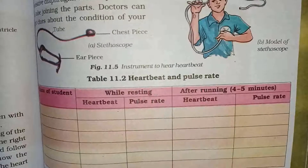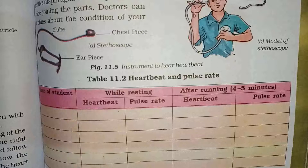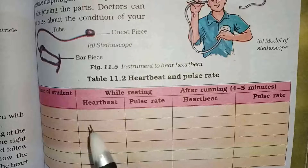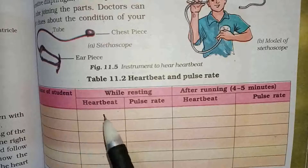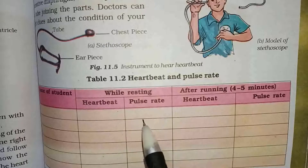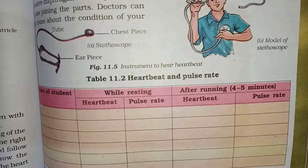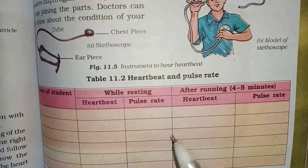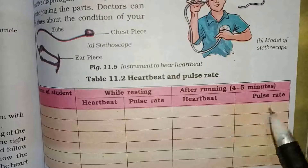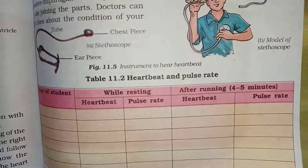Heartbeat and pulse are related. Aapko kya karna hai — apne family members ke naam yahan likhne hai. Jab rest kar rahe ho, tab apke heartbeat aur pulse rate count karke likhne hai. After four or five minutes of running, aapko apke heartbeat aur pulse rate note down yahan pe karne hai.